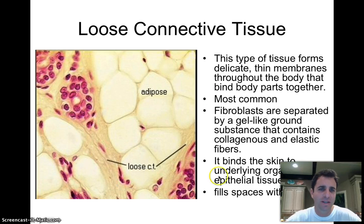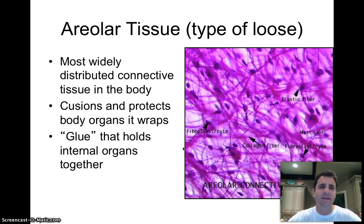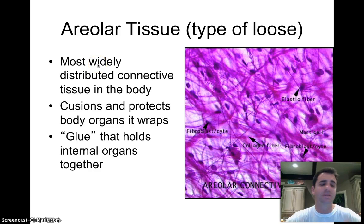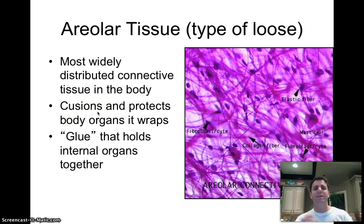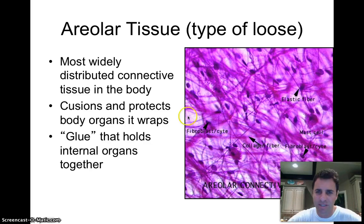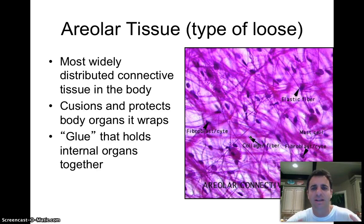Here you can see loose connective tissue. Areolar tissue is a type of loose connective tissue — actually the most common type — and loose connective tissue overall is the most common in the body. Areolar tissue cushions and protects body organs, wraps around them, and acts as the glue that holds them together. The areolar tissue fibers go in opposing directions forming a giant meshwork — all these fibers going every which way creating a very strong and buoyant support to hold tissues together.